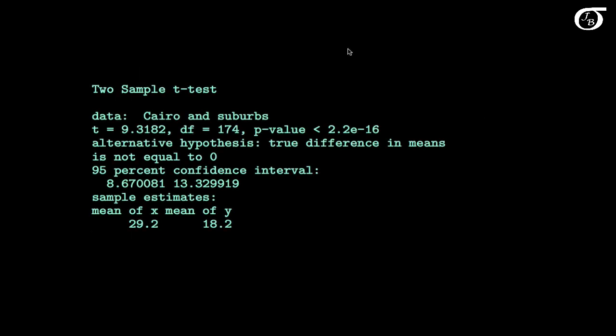The pooled variance t-test is testing the null hypothesis that the population means are equal. Down here we had a sample mean for the officers in the suburbs of 18.2, a sample mean of the officers in Cairo of 29.2, and the difference in means was found to be 11.0.